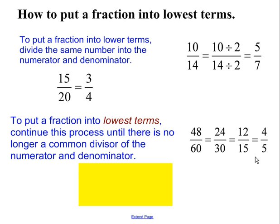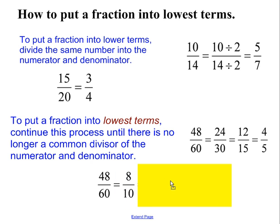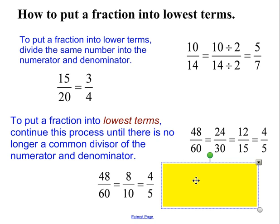Now, this process can be done slightly differently by dividing by different numbers. In this particular case, I start with 48 over 60. I notice that 6 goes into top and bottom, giving 8 over 10. Then divide top and bottom by 2, and we get an answer again of 4 fifths.